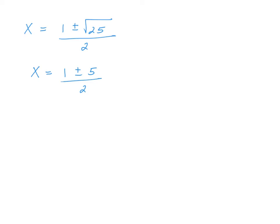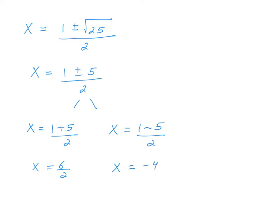The plus or minus means we're dealing with two expressions. The square root of 25 is 5, so x equals 1 plus or minus 5 over 2. Breaking it into two pieces: x equals (1 plus 5) over 2, or x equals (1 minus 5) over 2. On the left, 1 plus 5 is 6, and 6 over 2 is 3 — that's one of our solutions. On the right, 1 minus 5 is negative 4, and negative 4 over 2 is negative 2. This process gives the same solutions. The quadratic formula is nice for equations that are difficult to factor.